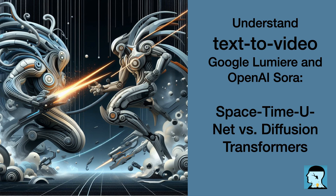How do the unique architectural designs of Lumiere's space-time unit and Sora's Diffusion Transformers impact the efficiency and effectiveness of video synthesis from text prompts? What key architectural elements or components in each model contribute to their ability to generate high-quality videos with spatial and temporal consistency? The unique architectural designs of Lumiere's space-time unit and Sora's Diffusion Transformers impact the efficiency and effectiveness of video synthesis in interesting ways. Imagine you are building a puzzle. Lumiere's space-time unit is like a big-picture puzzle where you can see the whole image and all its details at once, helping put all the pieces together efficiently by looking at the whole story in one glance.